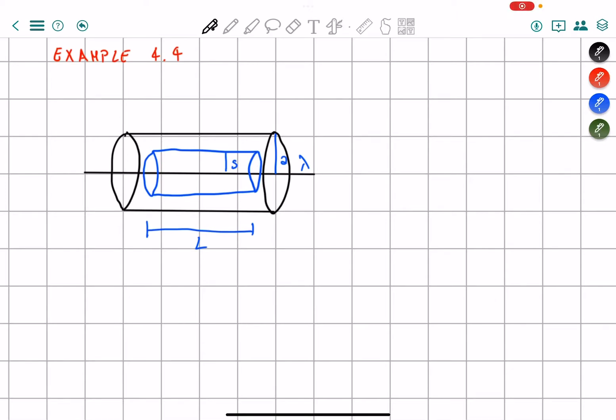In example 4.4, we are given a wire that is surrounded by a rubber insulation, therefore a dielectric, and we are asked to find the electric displacement.